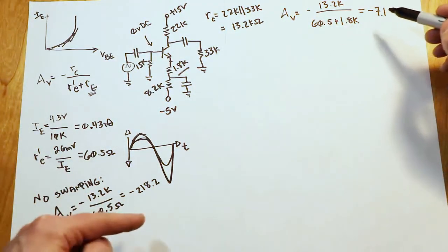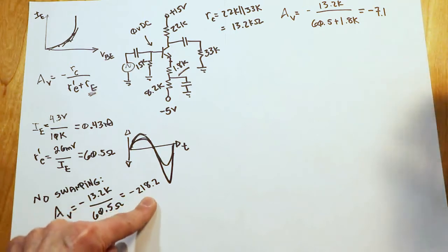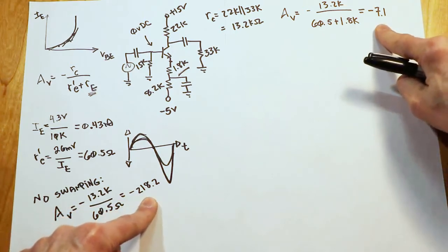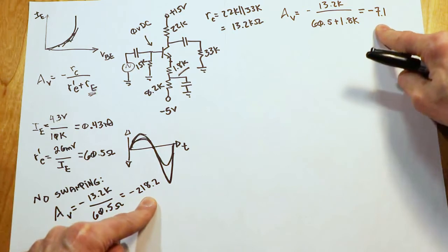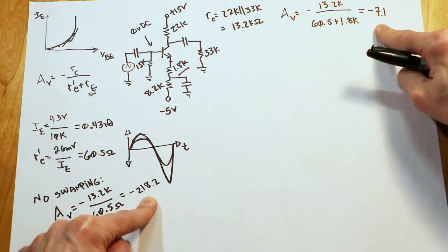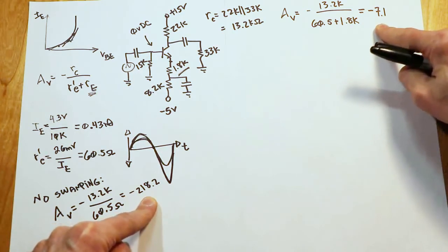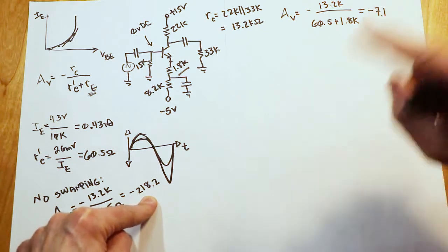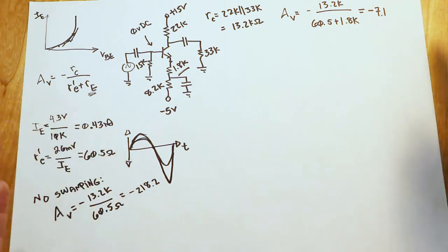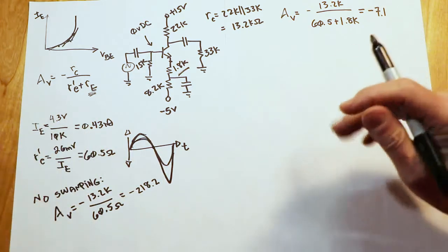I mean, this change from the original 218 down to 7, you're looking at about a 30-fold decrease in gain. And in fact, that distortion is going to go also down by a factor of about 30. It's a similar sort of ratio. So that's a good thing.